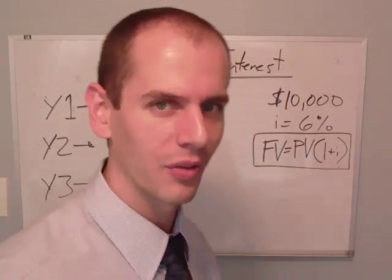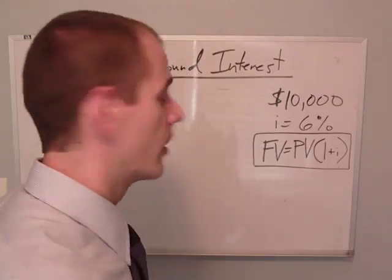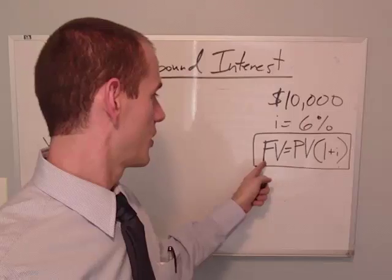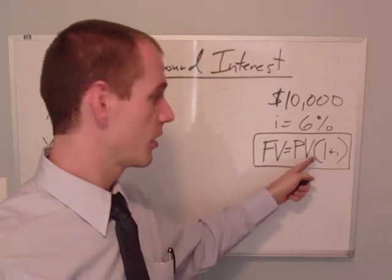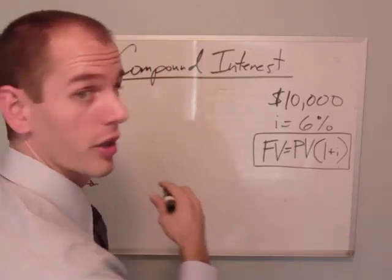So here's where compounding interest comes into play. Here's how it works. We're going to take our simple interest formula, which is future value equals present value times 1 plus i. We're going to plug in these numbers. So here we go, year one.